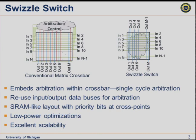The second thing we did was reuse our input and output wires for arbitration, cutting down on the number of wires going into and out of the crossbar by using them for dual purposes. We also take SRAM-style optimizations, designing a cell and replicating it, using bit-line pre-charging and sense amplifiers at the output to create a low-swing change in the crossbar. This helps with speed and power, and provides an ability to scale crossbars further than in the past.